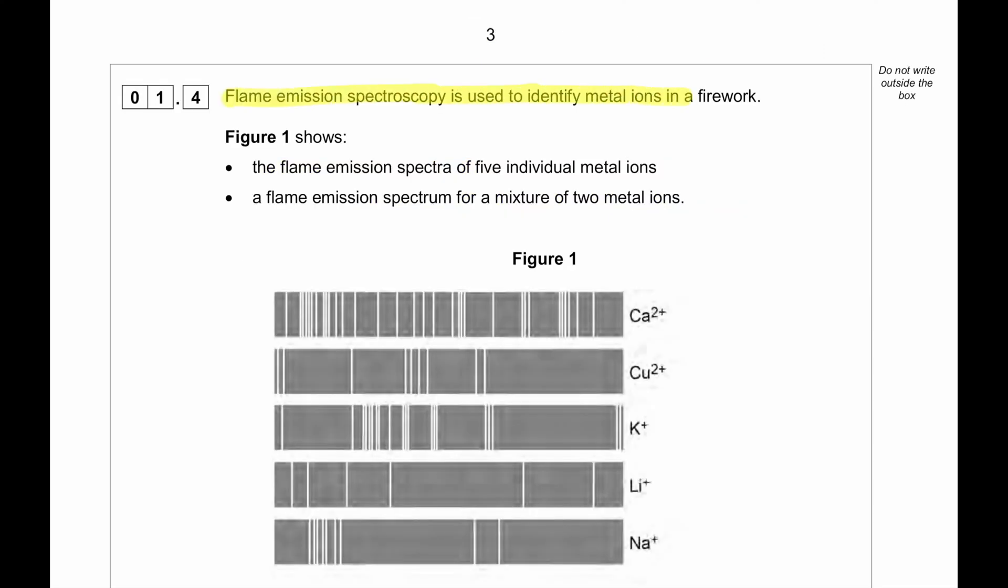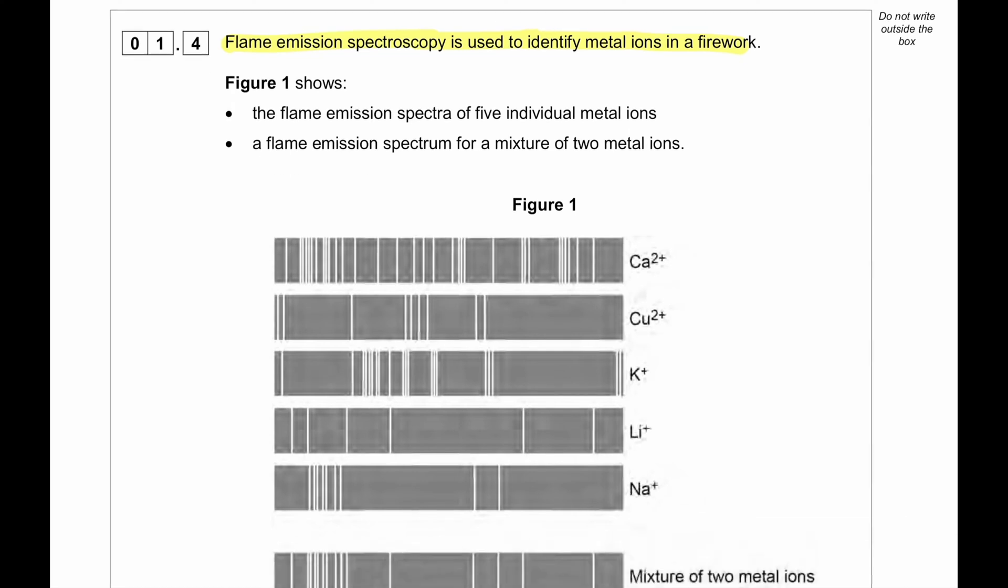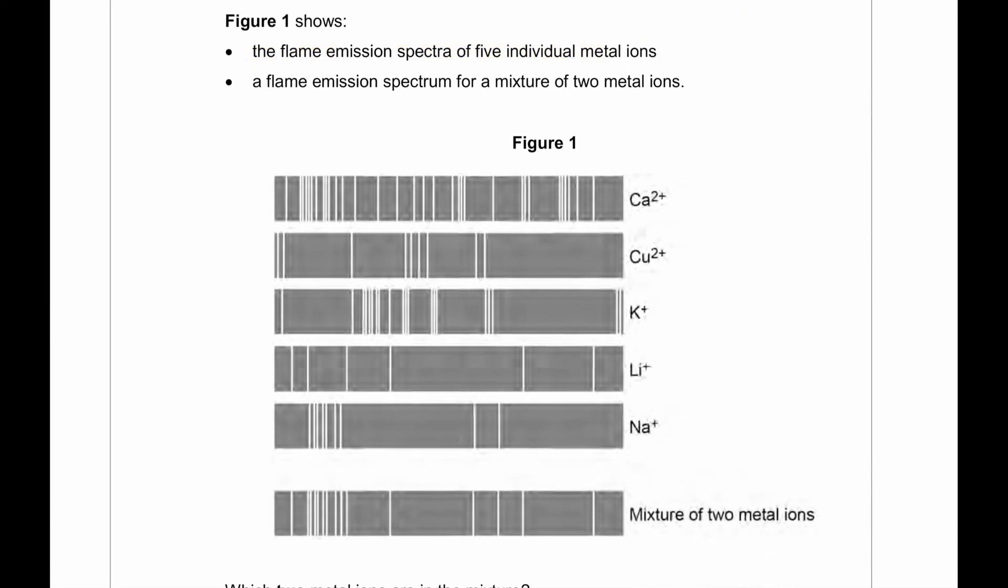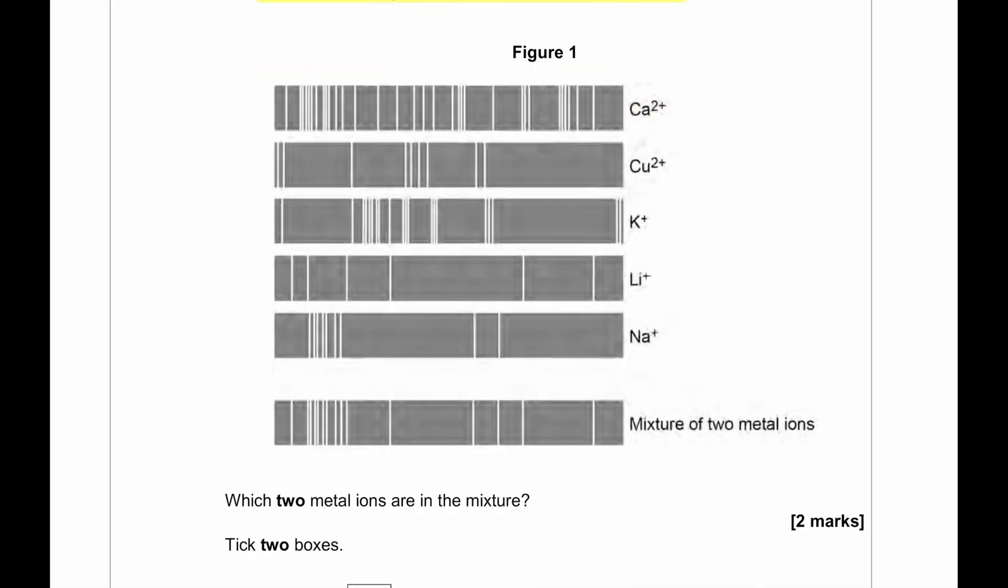Flame emission spectroscopy is used to identify metal ions in a firework. The flame emission spectra of five individual metal ions and a flame emission spectrum for a mixture of two metal ions. So we can see for calcium, copper, potassium, lithium and sodium and then we can see the mixture of two metal ions.